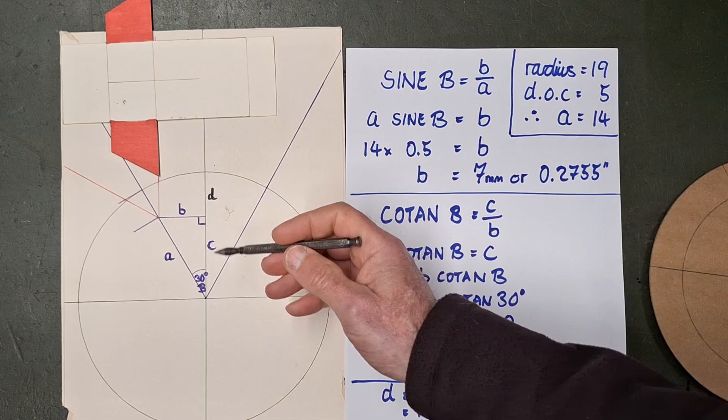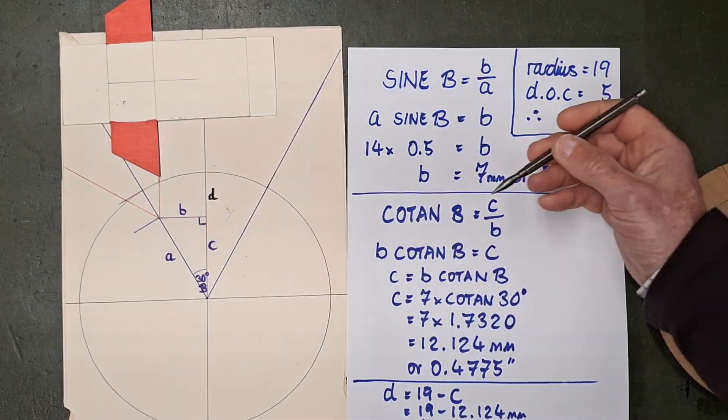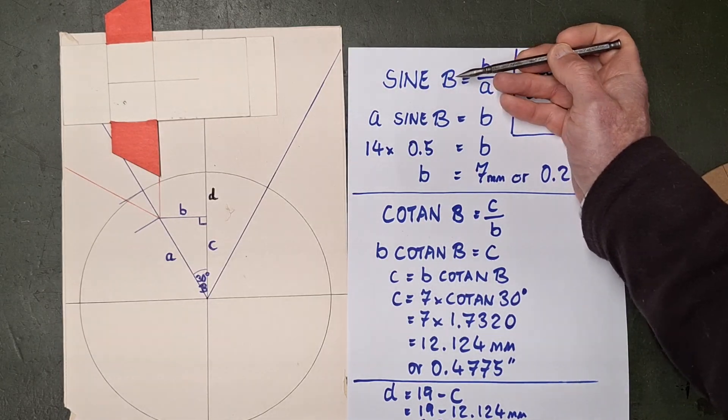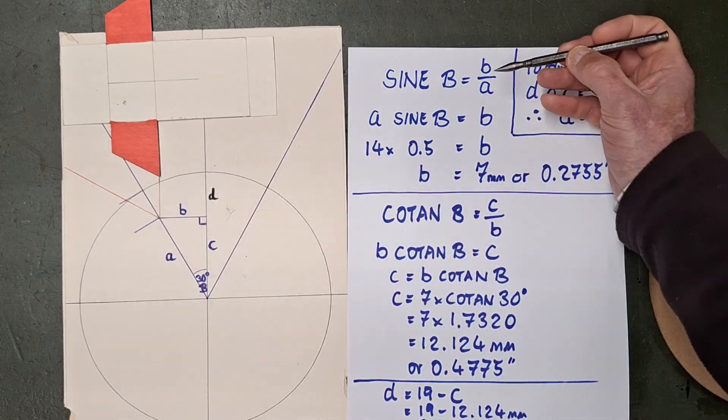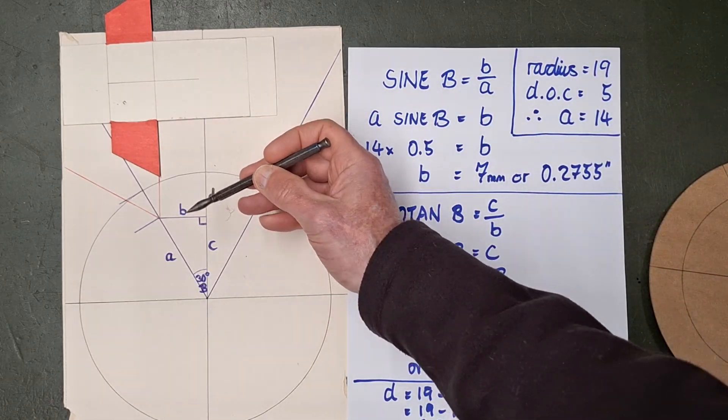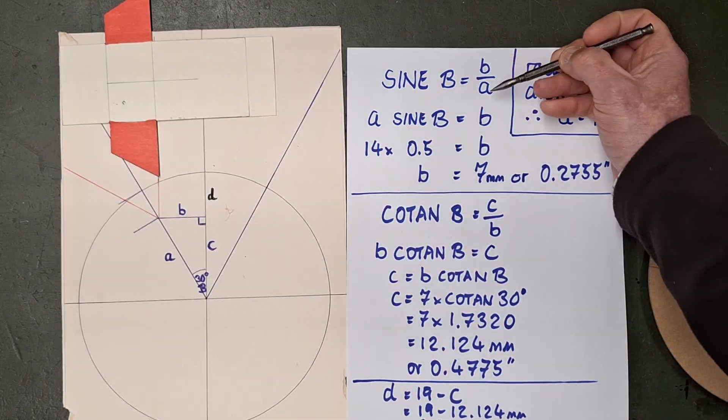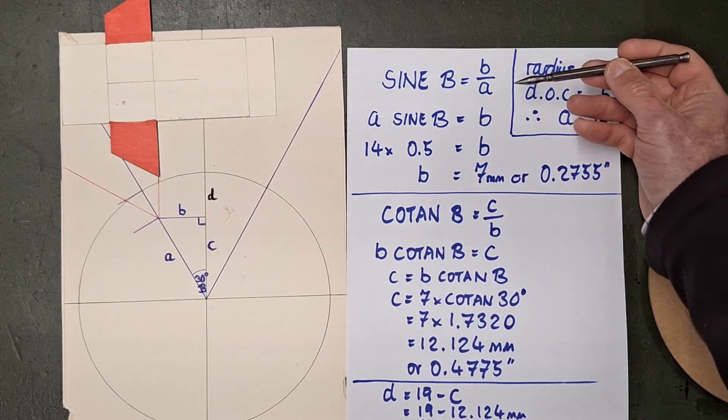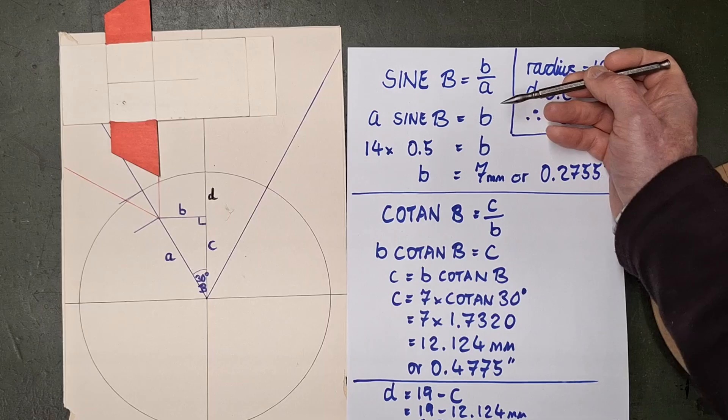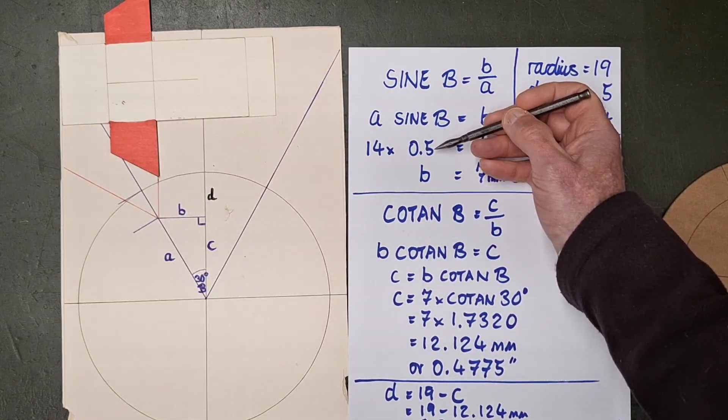So to get that dimension B there, our forward traverse, we know that the sine of angle B, our 30 degree angle there, is the perpendicular of the triangle over the hypotenuse of the triangle represented by B and A. So multiply both sides by A. So A times sine B is B.